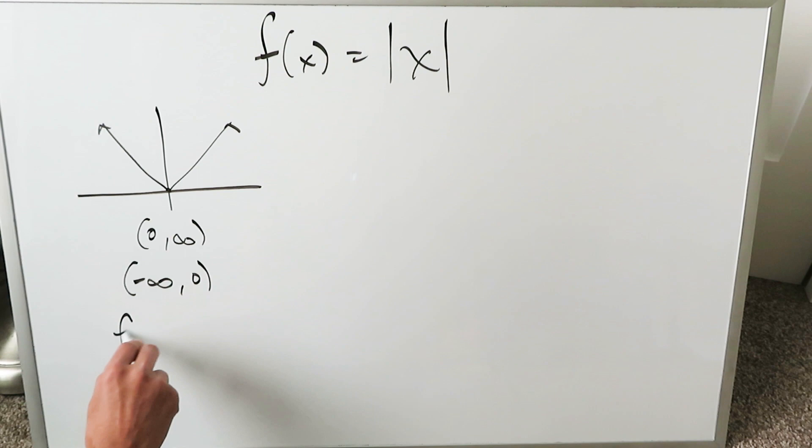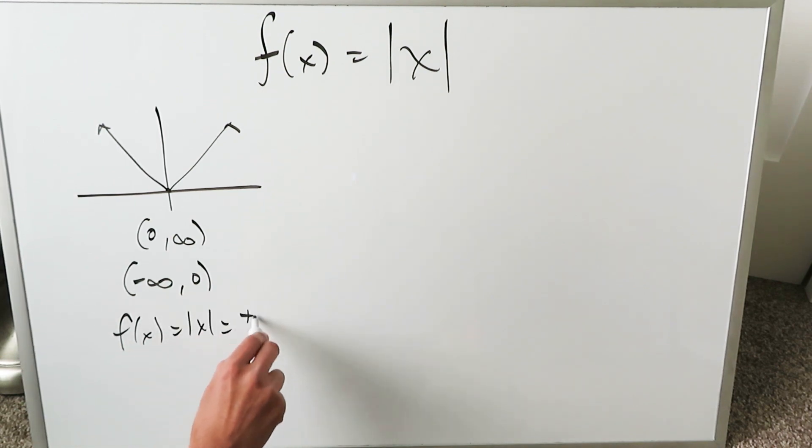When you're looking at f(x) equals the absolute value of x, it's also equal to plus and minus x. As you can see, you open up the absolute value, you have that.